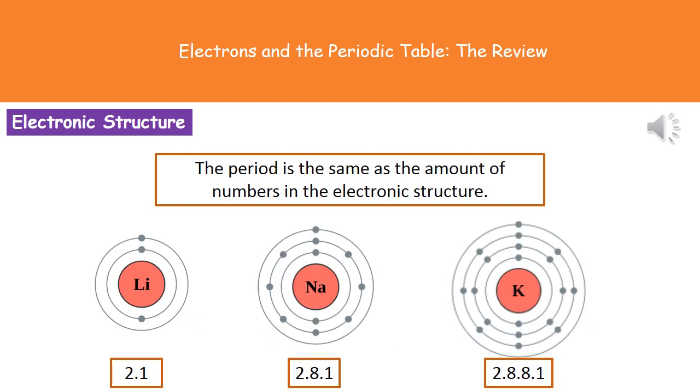Finally we just need to remember that when we're looking at the period, then that will be the same as the amount of numbers in the electronic structure. So if we have a look at lithium for example, because its electronic structure is 2.1, then we've got two numbers there which tells us it's in period 2. Sodium which has 2.8.1 is going to be in period 3 because there are the three numbers there. Potassium, 2.8.8.1, four numbers, it's going to be in the fourth period.